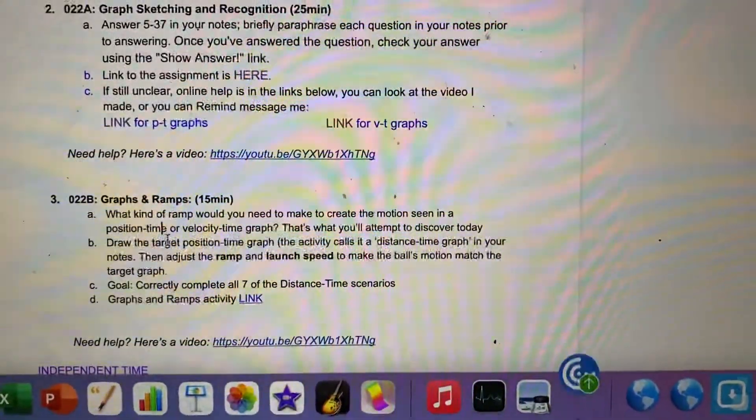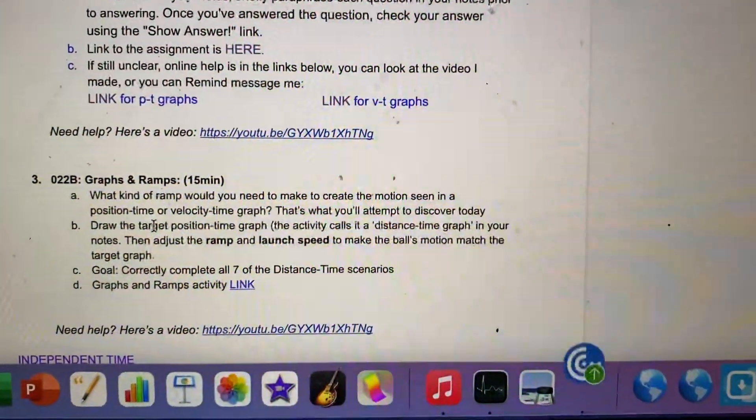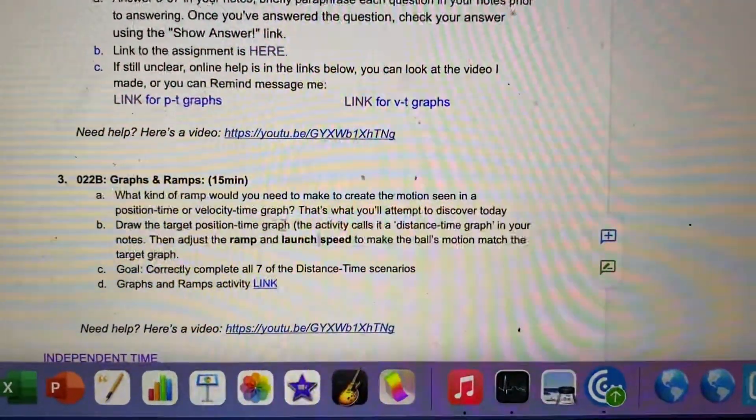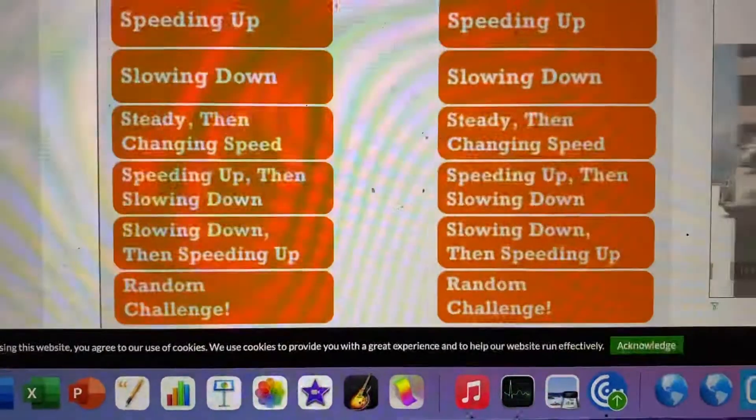So you're going to draw the target position time graph, and then you're going to adjust the ramp and launch speed to make the ball's motion match that ramp. So let's check it out.